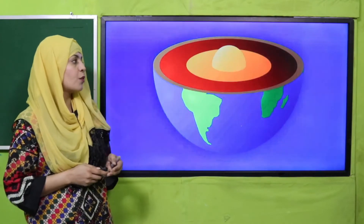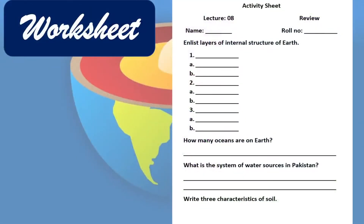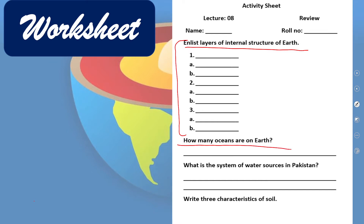Now is the time for your evaluation practice, for which you can download this worksheet from the description box below this video, or you can get it in print form from your teacher. My dear students, aapko apna naam likhna hai, roll number likhna hai, and then enlist the layers of the internal structure of the earth. Also, crust ke doh portions kaun se hain, aap khud kareenge. Then how many oceans are on earth?